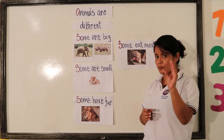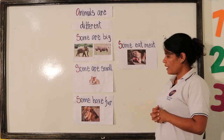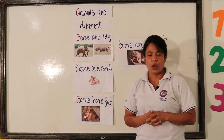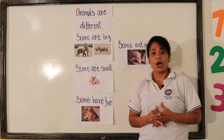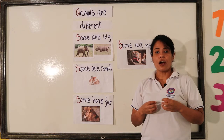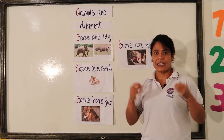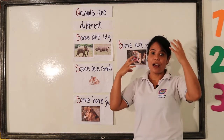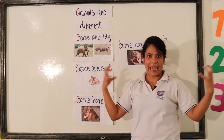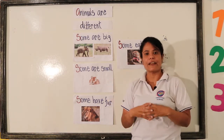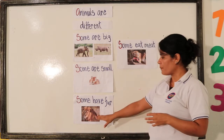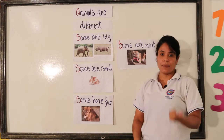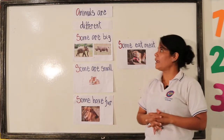They are small. And we have some animals that have fur. When we talk of fur, it means that the animal has a lot of hair. That is the fur. For example, the lion, the bear.